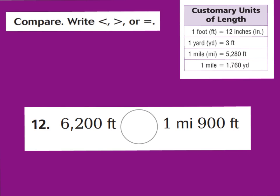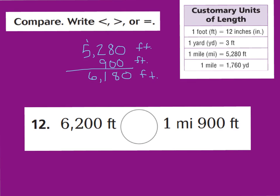For number 12, we have 6,200 feet on one side, and on the other side it's 1 mile and 900 feet. Let's convert everything into feet to compare. Pause the video and change 1 mile plus 900 feet all into feet only. You should have changed it to 6,180 feet, because 1 mile equals 5,280 feet, and then we add 900 feet to get 6,180 feet. Since 6,180 feet is a little less than 6,200 feet, 6,200 feet is greater.